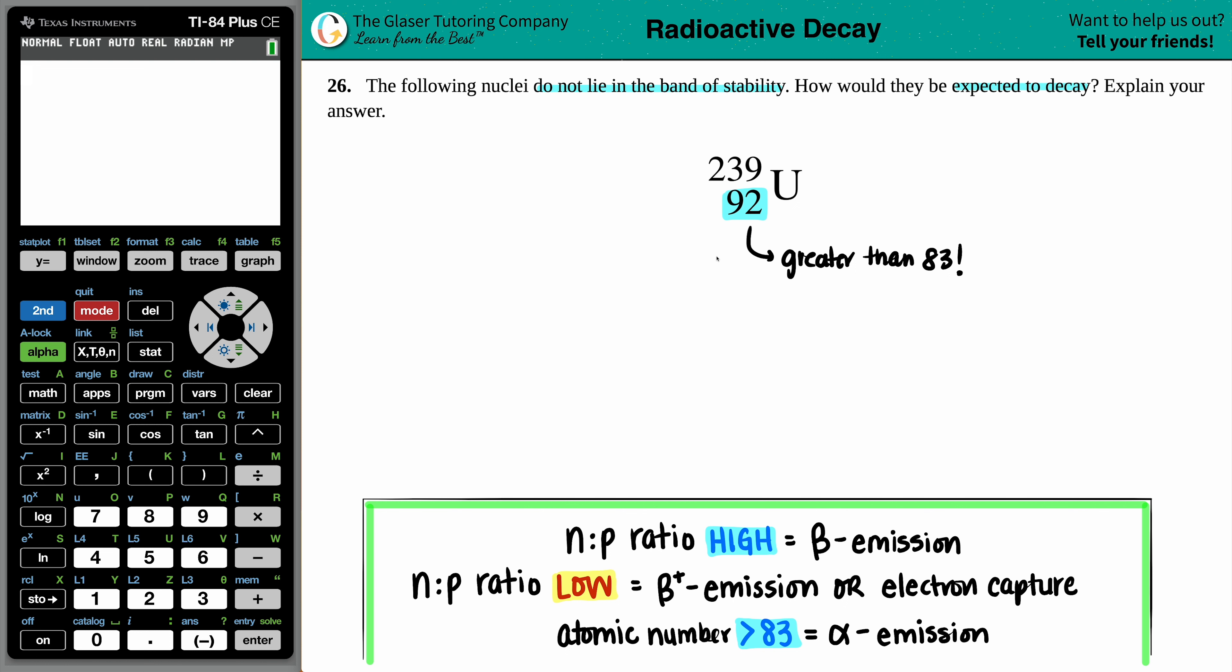So right off the bat, this is a huge nuclei. The huger that the nuclei is, the more unstable it's going to be, and therefore you need to get rid of tons of numbers really quickly. That's how we do it - by alpha emission. An alpha particle is just a helium atom. So in this case, since we have an atomic number that's greater than 83 (it's 92), this is automatically going to undergo alpha emission.